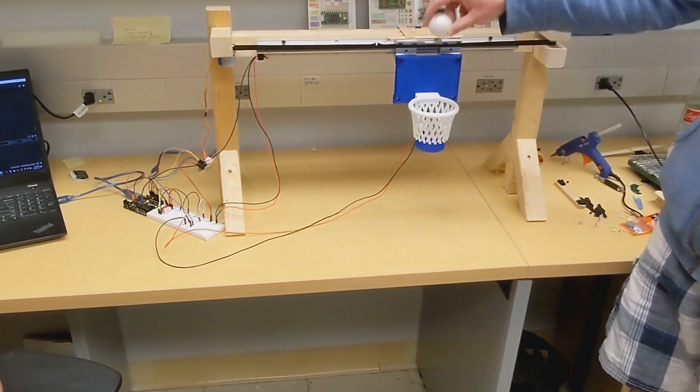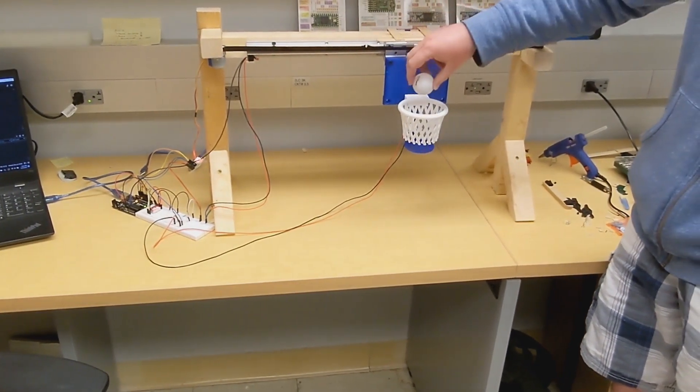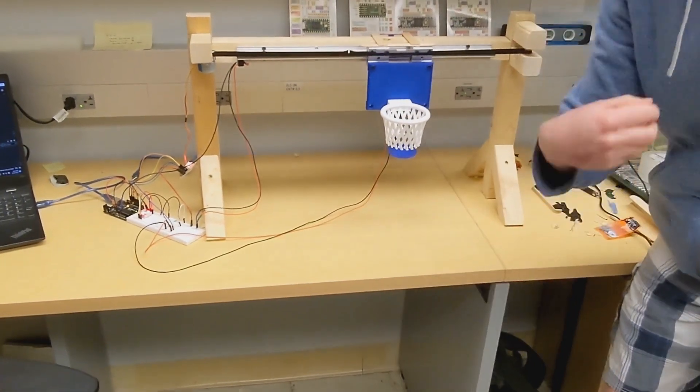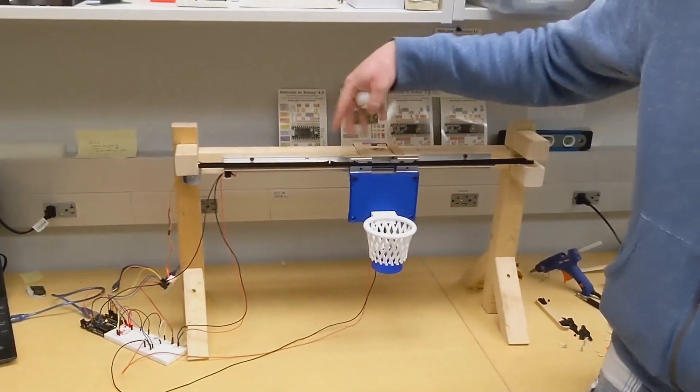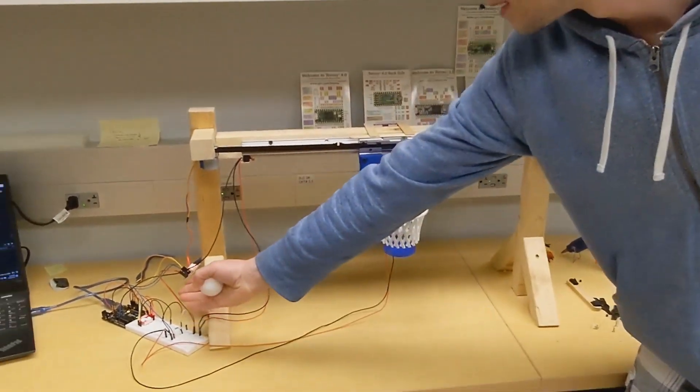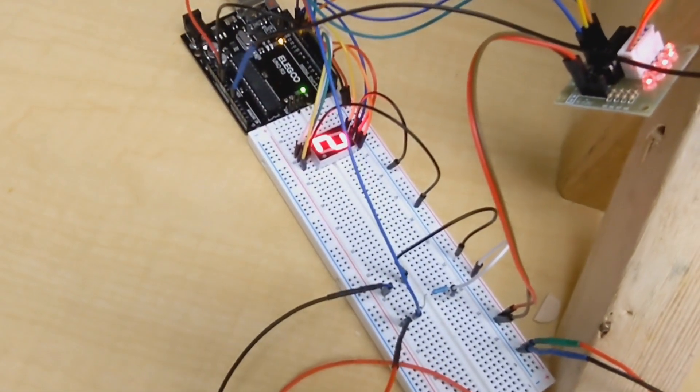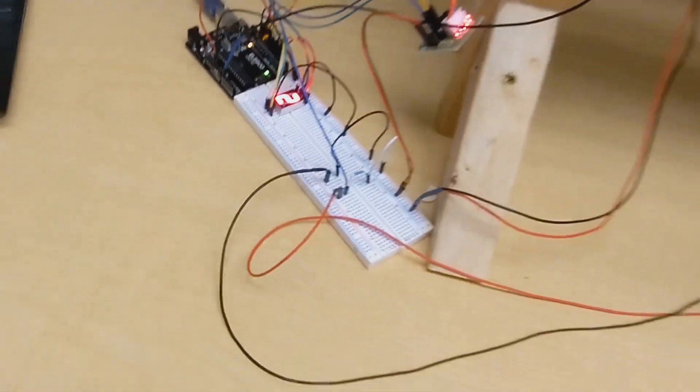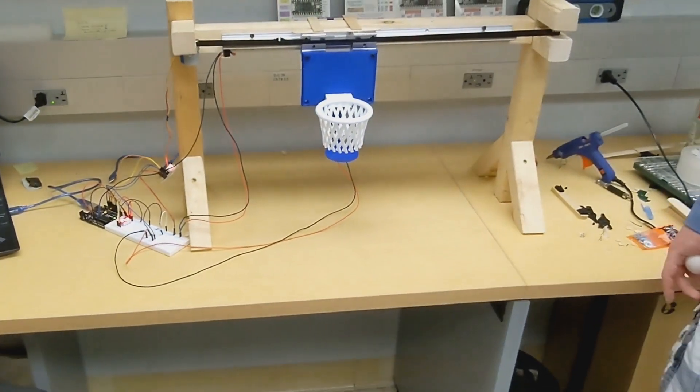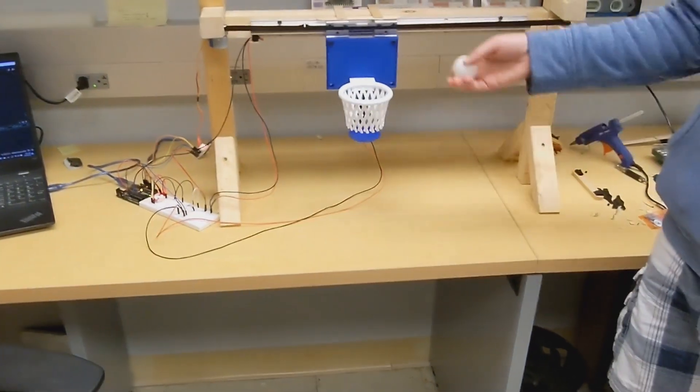Here we go. Now it will probably move to the left like so and will stop once again somewhere along here. As you can see on the LED digital display, it's keeping track of our score, counting up as each shot is made.